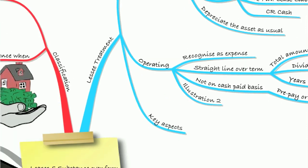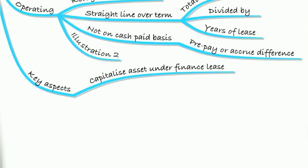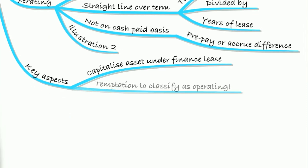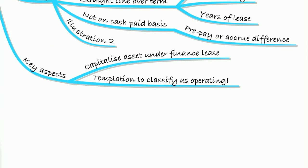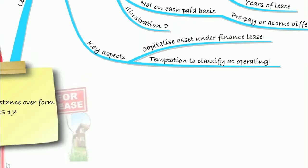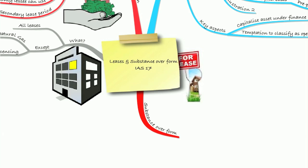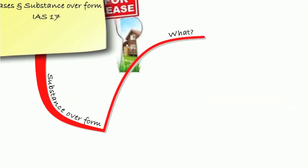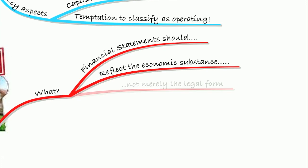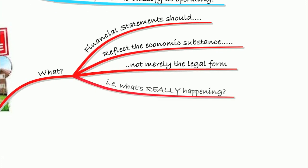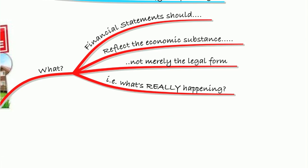A couple of key aspects on a finance lease: we need to capitalise the asset, whereas with an operating lease we don't. However, it's not the asset that a company might be tempted to misclassify — it's the liability. They may not want that large liability on their balance sheet for the finance lease, so they may be tempted to classify it as an operating lease. Substance over form, as outlined in the conceptual framework, disallows us from doing that.